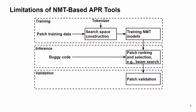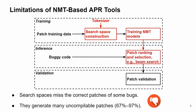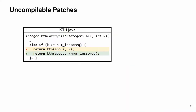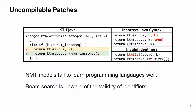However, NMT-based APR tools also have limitations. First, their search spaces miss the correct patches of some bugs. And second, existing NMT models and the BeamSearch strategy generate a lot of uncompilable patches. This is a bug in our benchmark, where the line in yellow background is the buggy line, and the line in green background is the correct patch that we hope to generate. However, we find existing NMT-based tools generate many uncompilable patches that disobey the Java syntax. The first tool calls the method with the wrong number of arguments, and the third one mismatches the parentheses, showing the NMT model doesn't learn programming language well. Besides, it also generates uncompilable patches that contain invalid identifiers — the red identifiers in these two patches are not declared in the project. This shows the BeamSearch is unaware of the validity of identifiers.